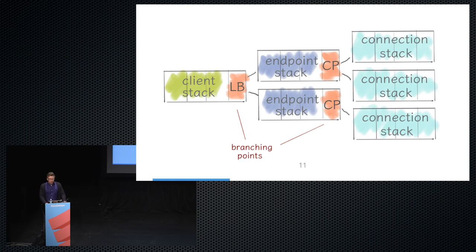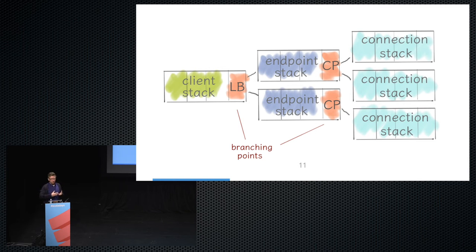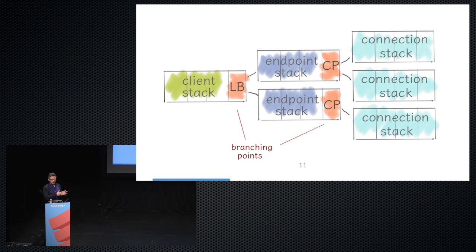Clients are slightly more complicated than servers. They form a tree of stacks with two branching points. First there's a load balancer that distributes traffic across nodes where your software is deployed. Then there's connection pooling that maintains a pool of connection stacks, where each stack terminates with a Netty pipeline. That tree of stacks forms the client — a slightly complicated picture, but still quite useful to understand.